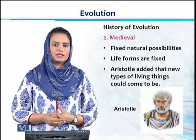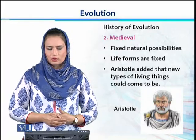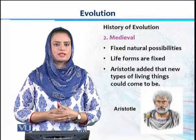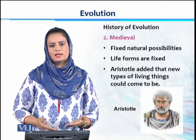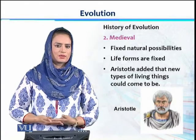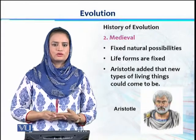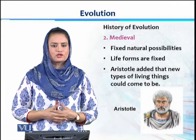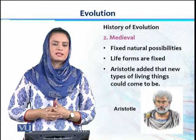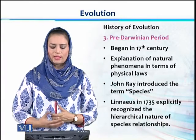The Classical period was followed by the Medieval period, during which experimentation had still not entered the world of science. Philosophers brought a theory of fixed natural possibilities — believing that all organisms, plants, and features of the Earth present today have remained unchanged since the formation of the Earth. These life forms were considered totally fixed. However, Aristotle added a modification, suggesting there is a possibility that new types of living things could come to be.